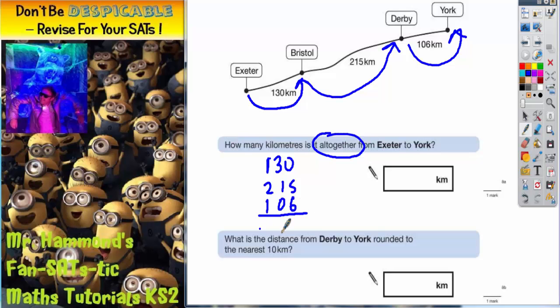Make sure you line them up in the correct columns. And now you just need to find your answer. So 0 plus 5 plus 6. We'll start with the units is 11. Put your 1 in.